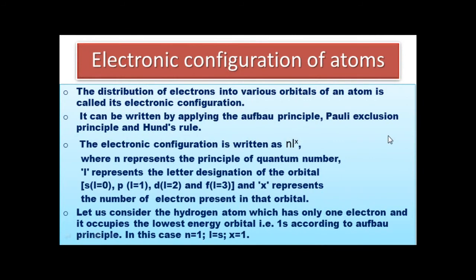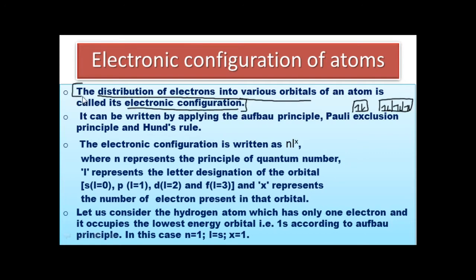Today, in this session, we are going to learn the new topic: Electronic Configuration of Atom. What is electronic configuration? It is the distribution of electrons in various orbitals of an atom. It can be written by applying three rules: Aufbau principle, Pauli exclusion principle, and Hund's rule.